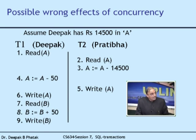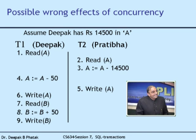Now Pratibha's transaction writes — she writes 0 rupees to the database. Then my transaction writes — it writes 14,450, because when it read, the value was 14,500. My transaction then reads B, adds 50 rupees to my friend's account, and writes B. Look at what has happened: my wife has effectively withdrawn 14,500 rupees and the bank does not know. The bank still shows 14,450 rupees as my balance — it reflects only the effect of my transaction.